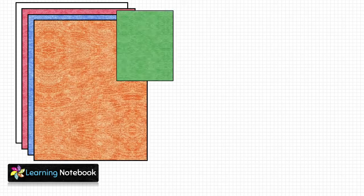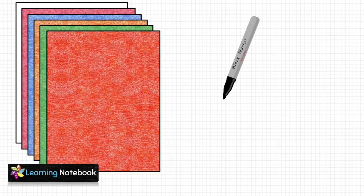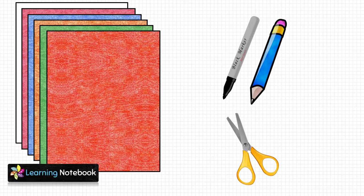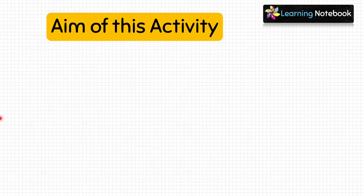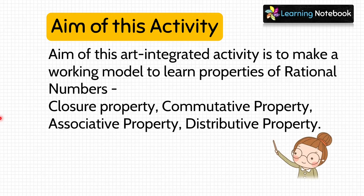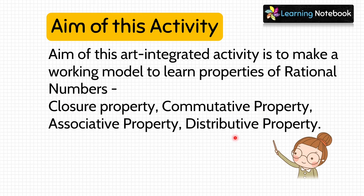For this activity we need a few colorful A4 sheets, a black marker pen, a pencil, a pair of scissors, a ruler, a compass, and a nut and bolt. The aim of this art-integrated activity is to make a working model to learn properties of rational numbers — closure property, commutative property, associative property, and distributive property.